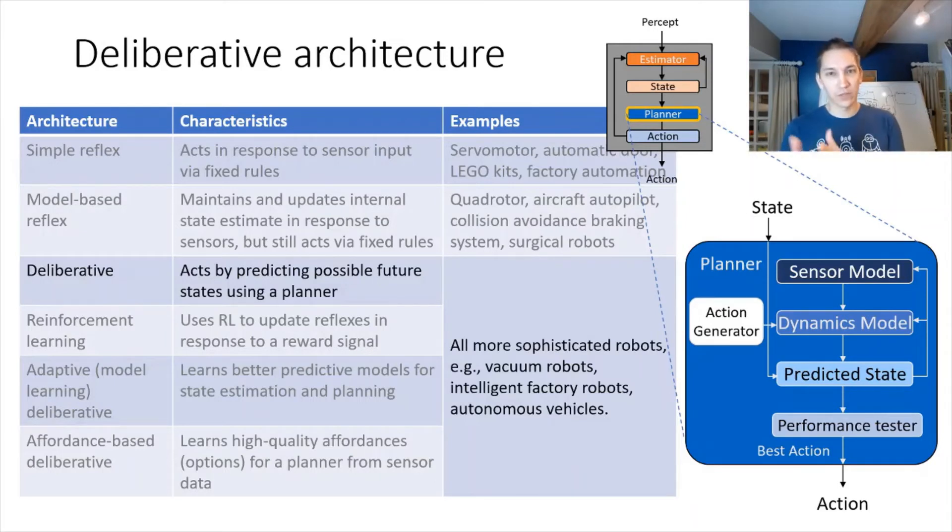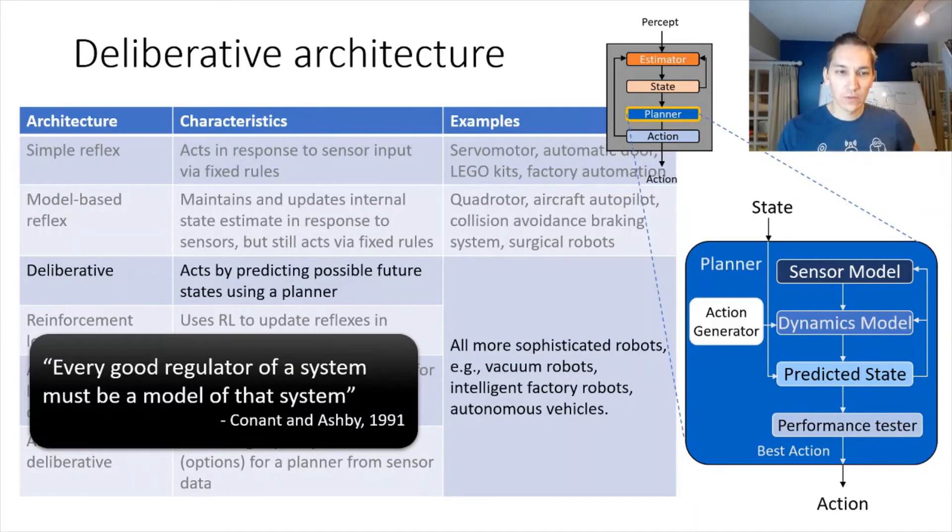Here's a case in which we can take that performance metric that is part of the problem domain and actually explicitly select the best predicted action. The philosophy behind a deliberative architecture comes from the cybernetics community. There's this idea that every good regulator of a system must be a model of a system. And you can see here, we have the sensor model and dynamics model, which try to predict how the external world outside of the robot's mind actually behaves according to its actions.